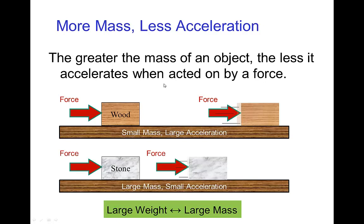Another part of the law of acceleration is that the more massive an object — and you can think of mass as being directly related to weight, though there's a little subtlety we'll discuss in another tutorial — the smaller the acceleration. Consider a wood block and a stone block: if we push on the wood block, it accelerates. If we push on the more massive stone block with the same force, there's going to be a smaller acceleration. Again, that's fairly intuitive.